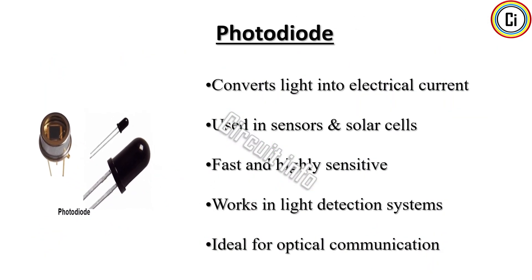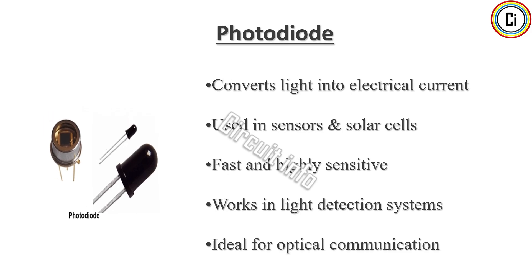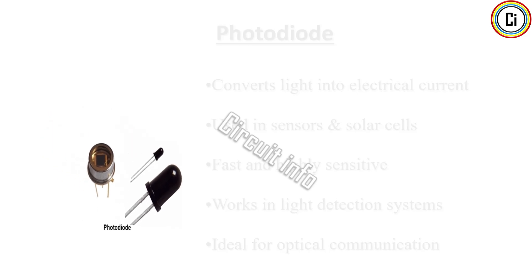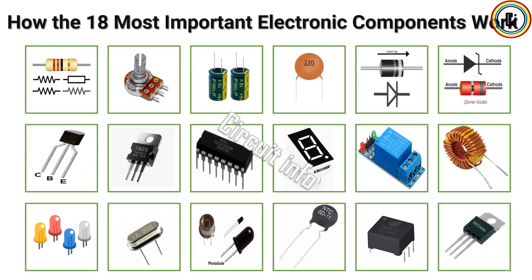A photodiode is a semiconductor device that converts light into electrical current. It is sensitive to light intensity and is widely used in optical communications, light sensors, solar cells, and safety equipment. Photodiodes operate in reverse bias, where incoming photons generate electron-hole pairs, producing current proportional to light intensity. They are valued for their fast response time, sensitivity, and accuracy in detecting light levels. Applications include fiber optic data transmission, medical instruments, and automatic lighting controls.